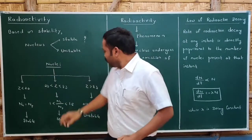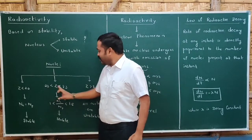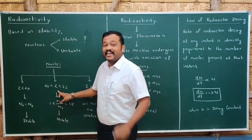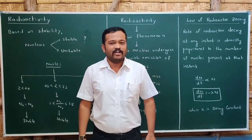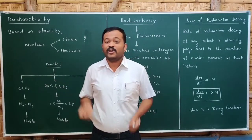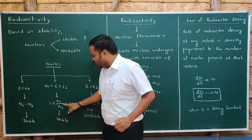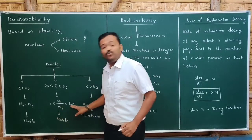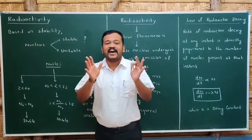In the second category, if the atomic number is greater than 20 and less than 83, the number of neutrons must be greater than the number of protons. As the number of protons increases, the electrostatic force increases, so we need more neutrons to balance it. If the ratio of neutrons to protons lies between 1 and 1.6, the nucleus is stable; otherwise it is unstable.